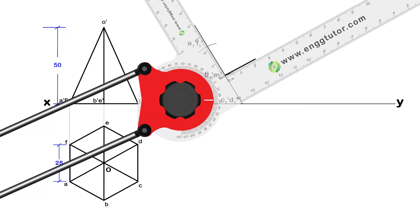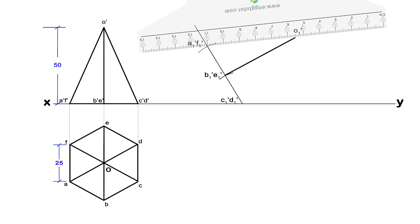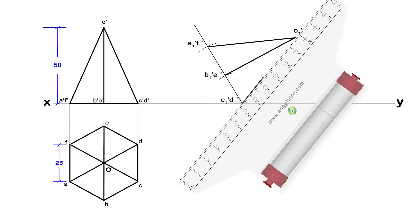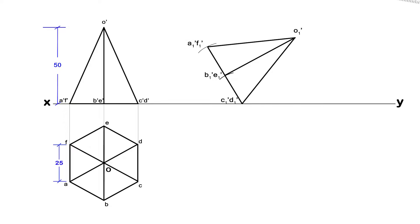From this center point, draw a line equal to the length of the axis that is 50 millimeters, and name the apex as O1 dash. Join every corner to the apex. This is the required front view.